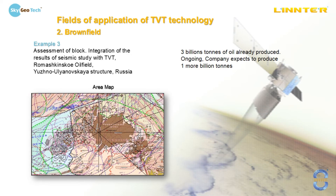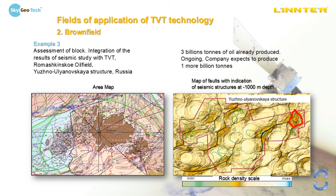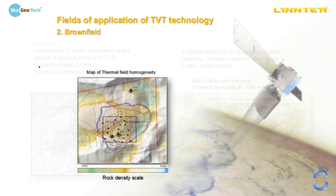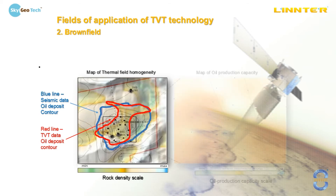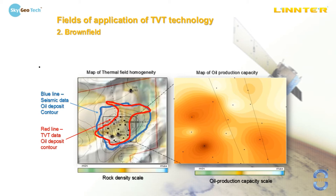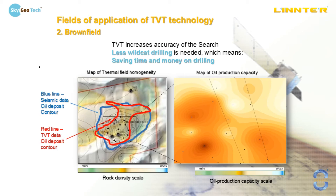This is the Romashkinskoye oil field, Yuzhano-Ulyanovskoye structure, Russia — one of the biggest deposits. Three billion tons of oil are already produced here and the company expects to produce one more billion tons. We were asked to make an assessment of the area shown by the red line. The blue line shows the seismic data deposit contour. We made TVT exploration and our contour, shown in red, is 35% less than the seismic one. According to our recommendations, the company started drilling in this area and all the wells drilled have good oil production. TVT technology allows avoiding unnecessary wildcat drilling, saving money.